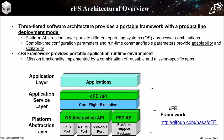The CFS has three layers that allow applications to be ported across different hardware, processor, and operating system combinations. The bottom layer is the platform abstraction layer, and it has two parts: the operating system abstraction and a platform support package. Each of these components has an application programmer interface, or API.